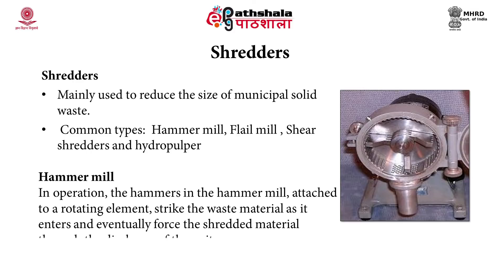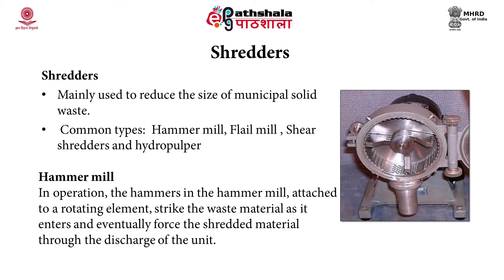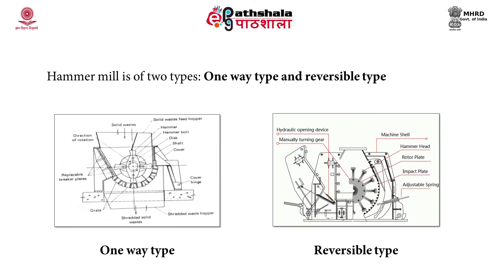Hammer mills are often used in large scale operations for reducing the size of waste. It is an impact device consisting of a number of hammers fastened to an inner disc that rotates at very high speed. Sufficient hitting results in the crushing and tearing of solid waste, thereby reducing its size. Hammer mills can be of two types: one-way type and reversible type.